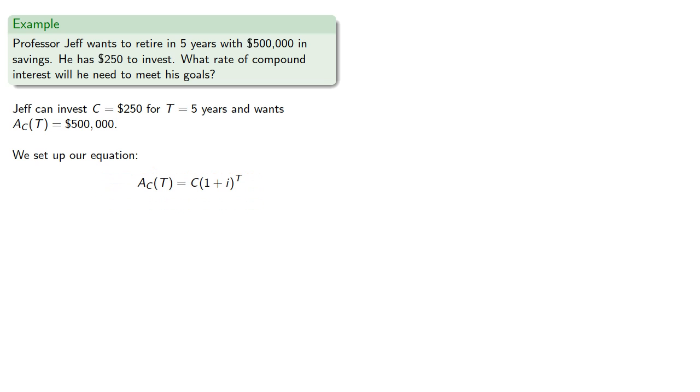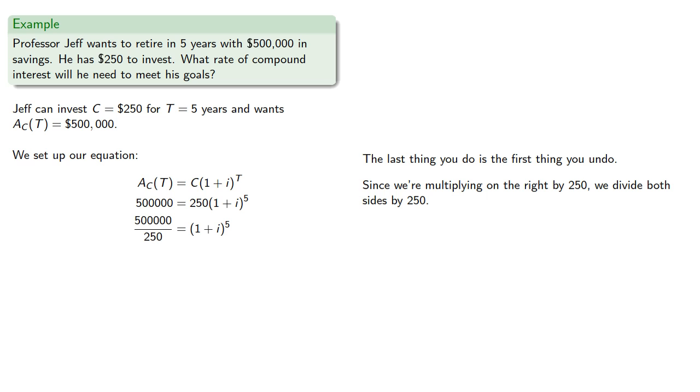And so we can set up our equation. We'll substitute in our known values. To solve this equation, it's helpful to remember the last thing you do is the first thing you undo. On the right-hand side, we add I to 1, raise it to the fifth power, and then multiply by 250. Since the last thing we do is multiply, then since we're multiplying on the right by 250, we begin by dividing both sides by 250.